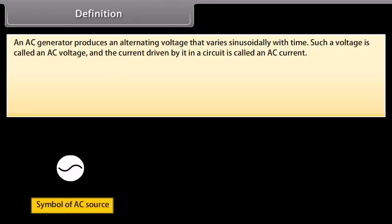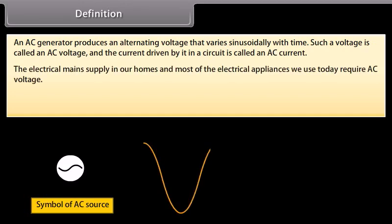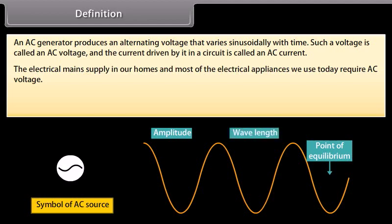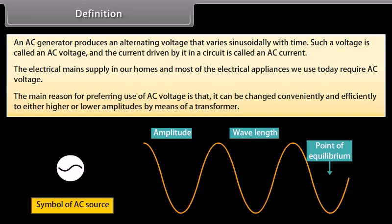Definition: An AC generator produces an alternating voltage that varies sinusoidally with time. Such a voltage is called an AC voltage and the current driven by it in a circuit is called an AC current. The electrical main supply in our homes and most of the electrical appliances we use today require AC voltage. The main reason for preferring use of AC voltage is that it can be changed conveniently and efficiently to either higher or lower amplitudes by means of a transformer.